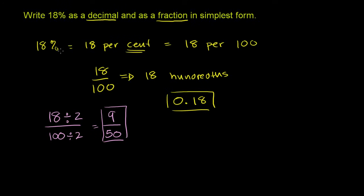So we have 18% is the same thing as 0.18, which is the same thing in simplest form as 9 fiftieths.